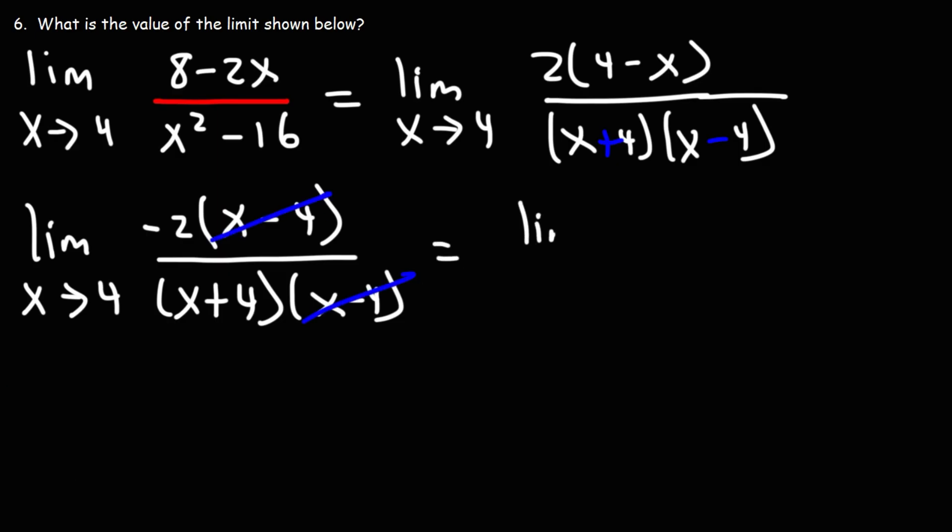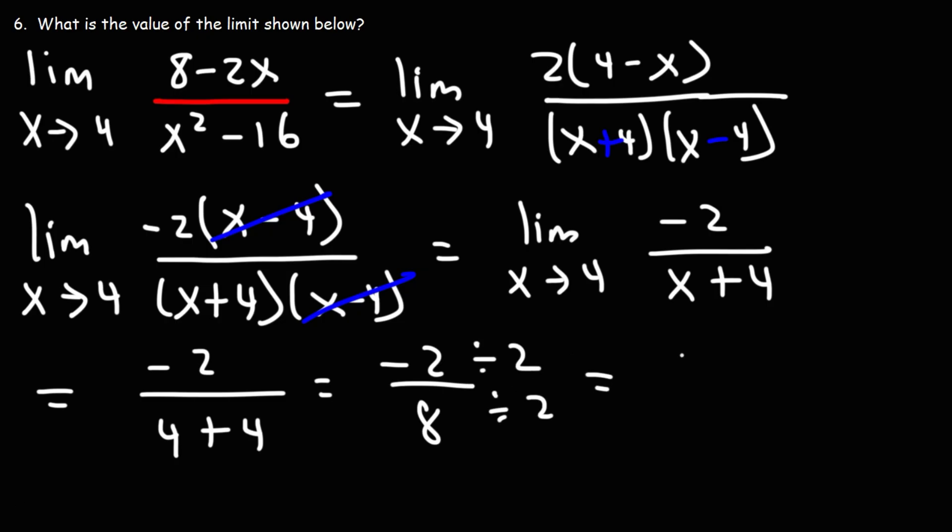We'll be left with the limit as x approaches four of negative two over x plus four. Now let's replace x with four—we can use direct substitution at this point. So it's negative two over four plus four. Four plus four is eight. Now we can reduce this fraction. If we divide both numbers by two, negative two divided by two is negative one, eight divided by two is four. This gives us the final answer of negative one over four.